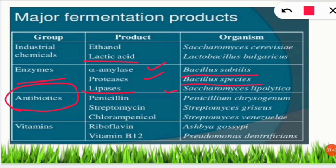Antibiotics are also obtained from fermentation. Penicillin is produced by Penicillium chrysogenum; streptomycin comes from Streptomyces griseus; and chloramphenicol from Streptomyces venezuelae. Remember: the correct organism for the first antibiotic produced is Penicillium chrysogenum, not Penicillium notatum — this is an important distinction.